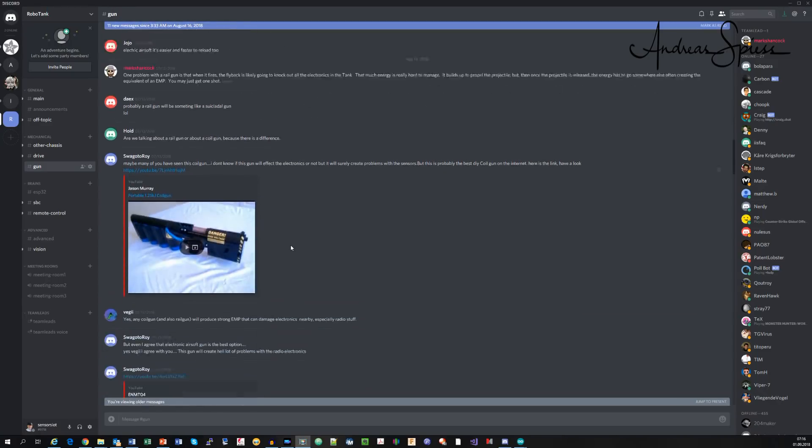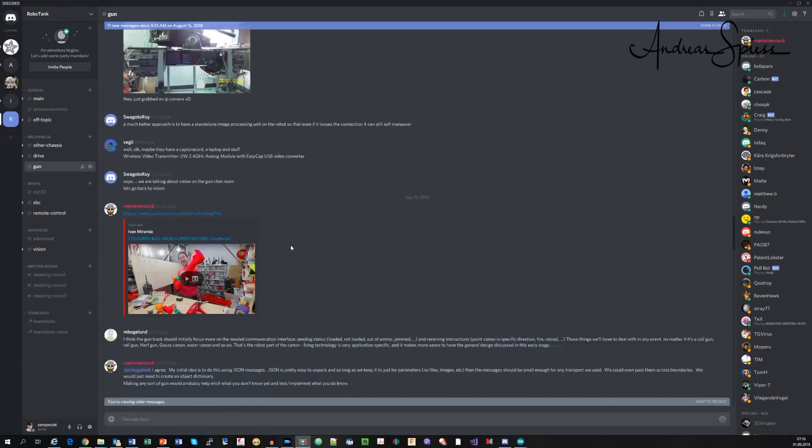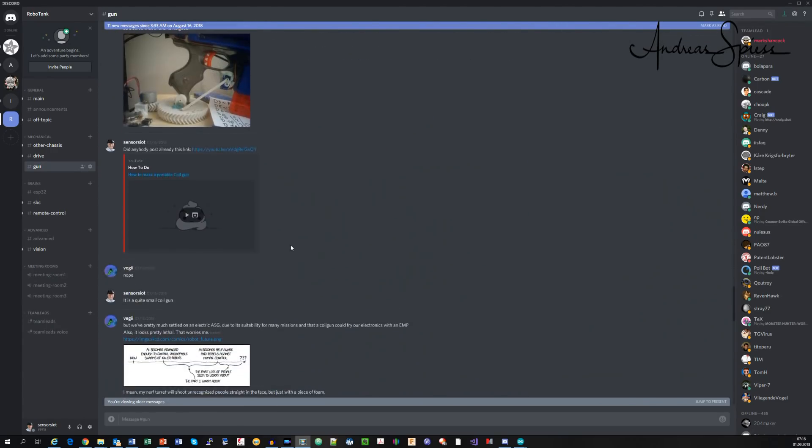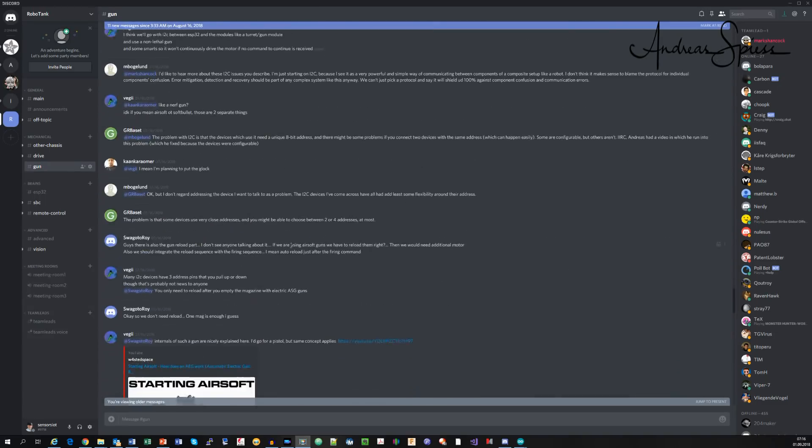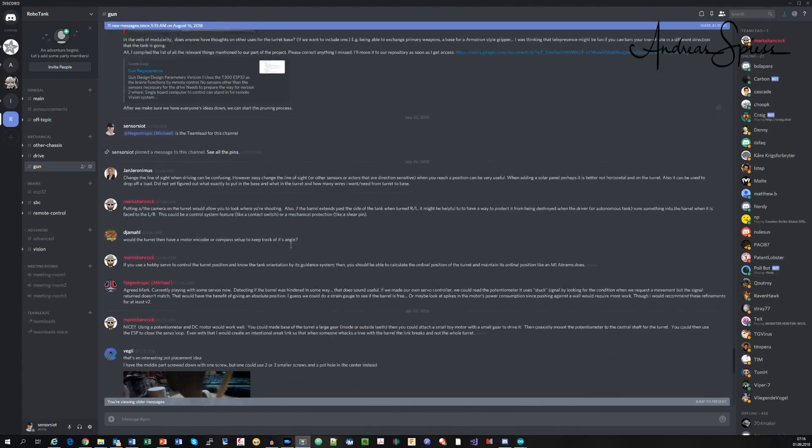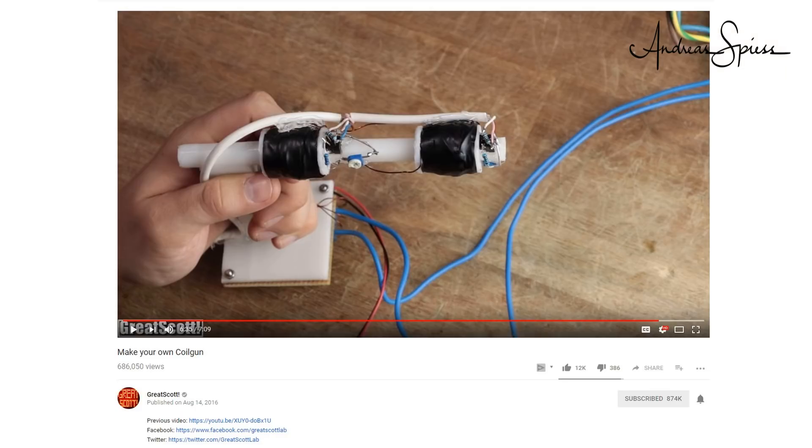If you look at the Discord channel of the summer project, you see that there are many possibilities to build a gun for a tank. But there is one favorite for an electronics engineer: a decent coil gun, sometimes also called rail gun, running purely on electricity. You could call it also the Tesla of guns. I wanted, of course, more.